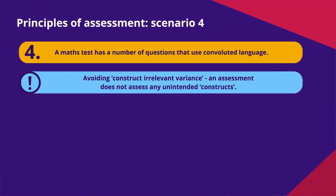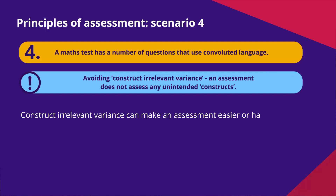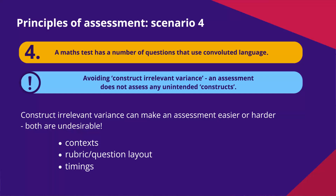In this scenario we have a problem with something known as construct irrelevant variance. If what we're trying to measure is students' ability in mathematics — that's the underlying construct — but the question is written in a way where the language is inaccessible, students who are strong mathematicians but have a slightly lower reading age can't access the question. That means you've ended up measuring not only a student's ability in maths but also their reading level, which is not what you're meant to measure — that is construct irrelevant variance.